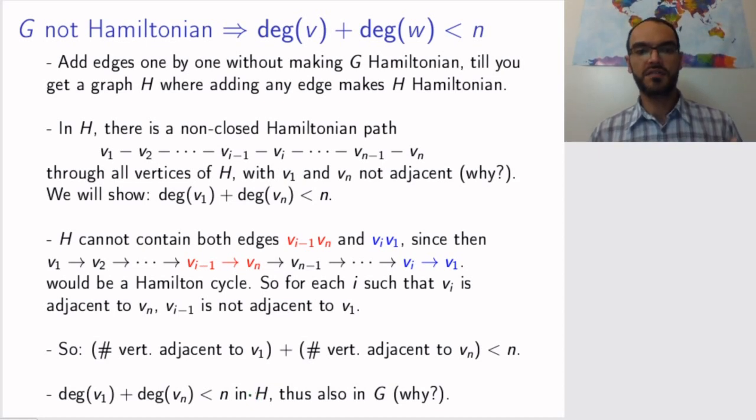But now we got our graph H by adding edges from our original graph G. If the degrees are not big enough in H, then certainly they will not be in G, because G is obtained by removing edges from H. So this proves the theorem.